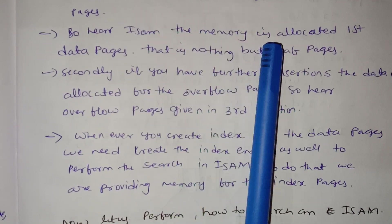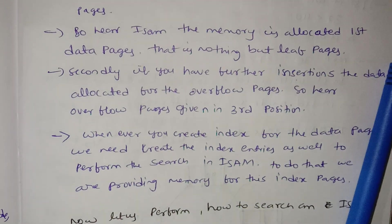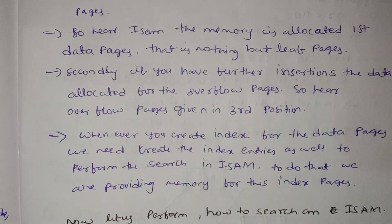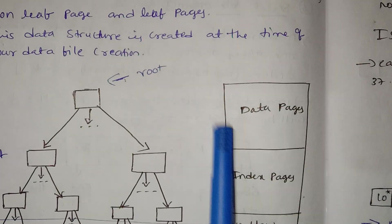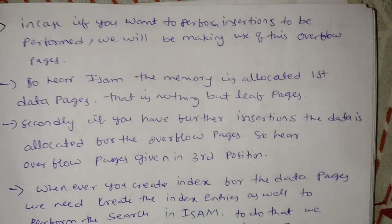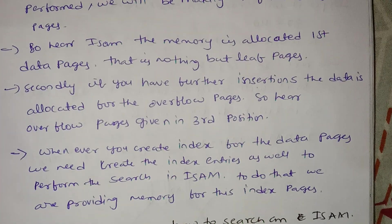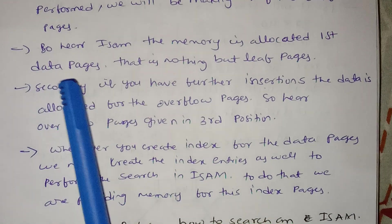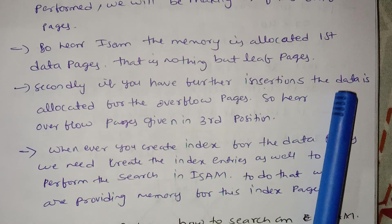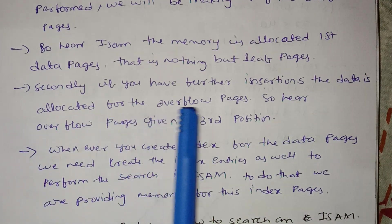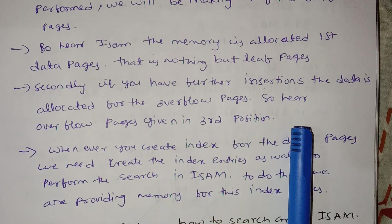In ISAM, memory is first allocated for data pages, which are the leaf pages. If you have further insertions, data is allocated to overflow pages, which hold the third position in terms of memory allocation.